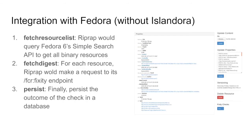To speculate about how you could integrate RIPRAP with Fedora without Islandora — simply with Fedora independently — it would be fairly easy. The two plugins the current Islandora toolchain uses, the Fetch Digest plugin and the Persist plugin, already exist and work. We would not need to rewrite them. We would need to write a special Fetch Resource List plugin for Fedora, doing that by querying Fedora 6's new simple search API to get all binary resources and utilize its paging to iterate over all the resources in the repository.